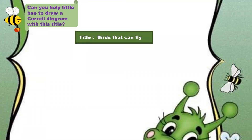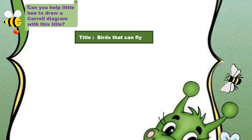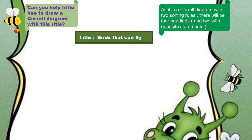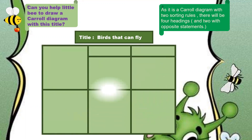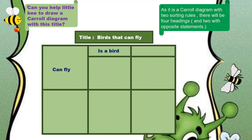Can you help the little bee to draw a cattle diagram with this title? Title: birds that can fly. As it is a cattle diagram with two sorting rules, there will be four headings with two opposite statements: is a bird, can fly, can fly but is not a bird.